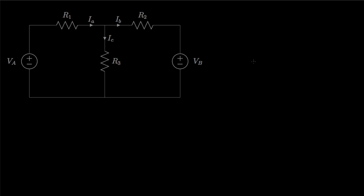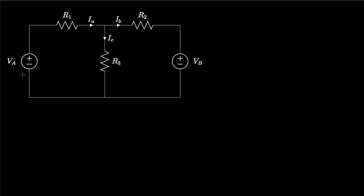We introduce the mesh current method by looking at a circuit that has two voltage sources and three resistors. The three currents in the circuit are labeled Ia, Ib, and Ic. We know the voltages associated with the sources and the resistances, and we'd like to solve for the three currents.